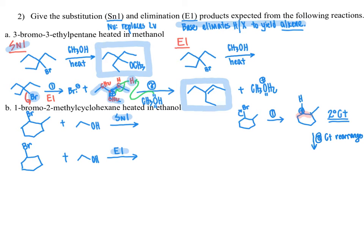It is possible to do a carbocation rearrangement that converts the secondary carbocation into a more stable tertiary carbocation. We can move a hydrogen by one carbon in a 1,2-shift toward the carbocation. Taking the highlighted hydrogen and moving it over one spot — now bonded to the original carbocation carbon — gives us a CH2 group there, and our positive charge moves to a new position.